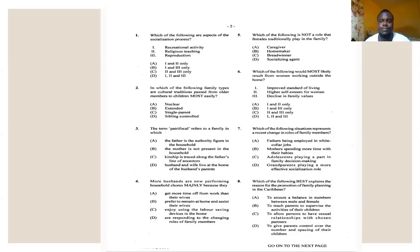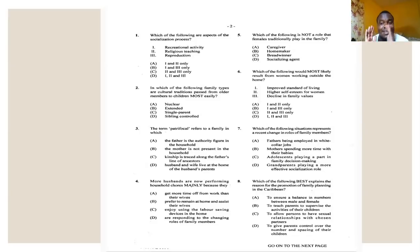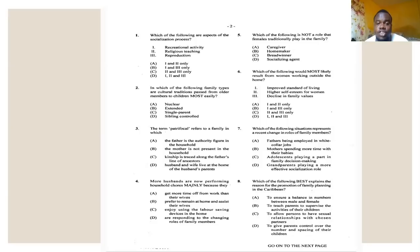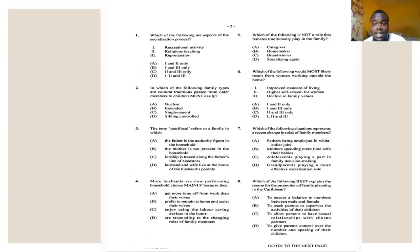Number two says: in which of the following family types are cultural traditions passed from older members to children most easily? Cultural traditions are passed on in all families, but which type does it most easily? Options are nuclear, extended, single-parent, and sibling control. The person with the wealth of knowledge in culture and traditions is usually grandparents, so any family that includes grandparents would be correct. The answer for two is B — extended — because more than two generations live together.